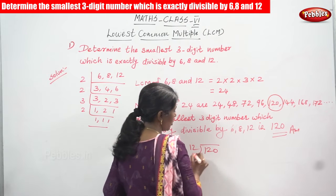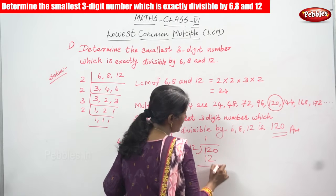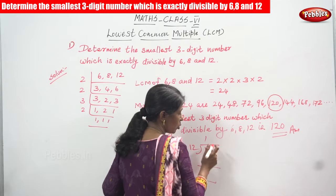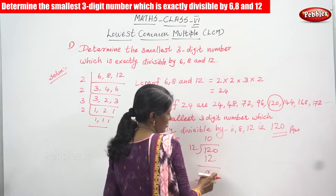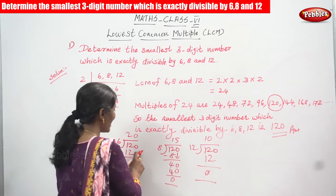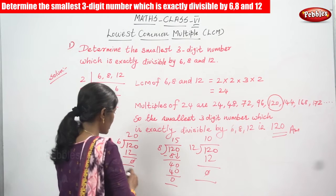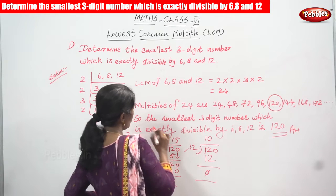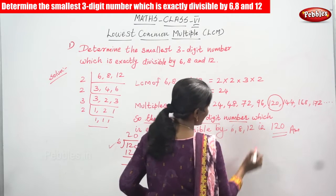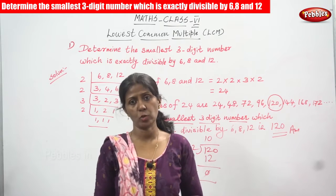Now we check 120 divided by 12. 12 divided by 12 gives 1, 1 × 12 = 12, 12 − 12 = 0, bring down 0, quotient is 10 and remainder is 0. So 120 is divisible by 12 as well. Therefore, 120 is the smallest 3-digit number exactly divisible by 6, 8, and 12.